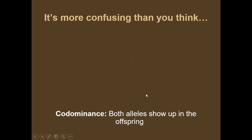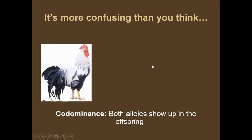Co-dominance means that it's dominant, but there's a couple of different alleles that are dominant at the same time. So co-dominance — let's look at the bottom of the slide — both alleles show up in the offspring. We've got a white allele and a black allele, and they're both showing. One is not dominant over the other. They are co-dominant.